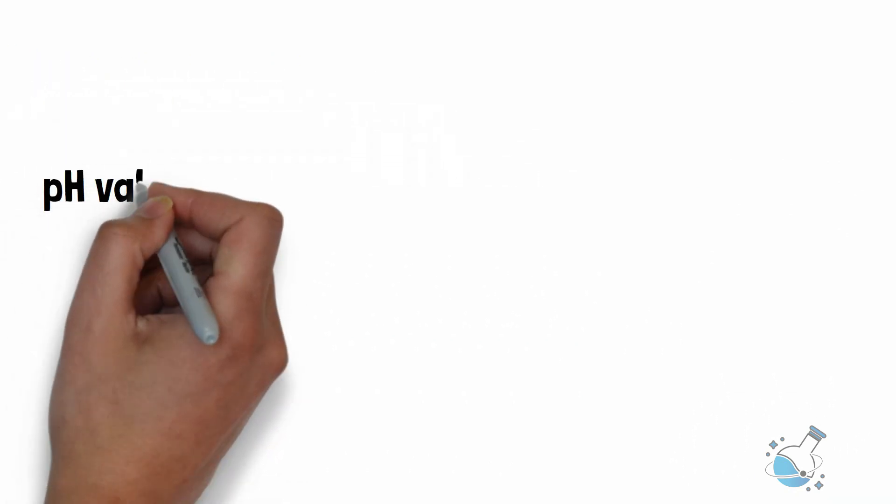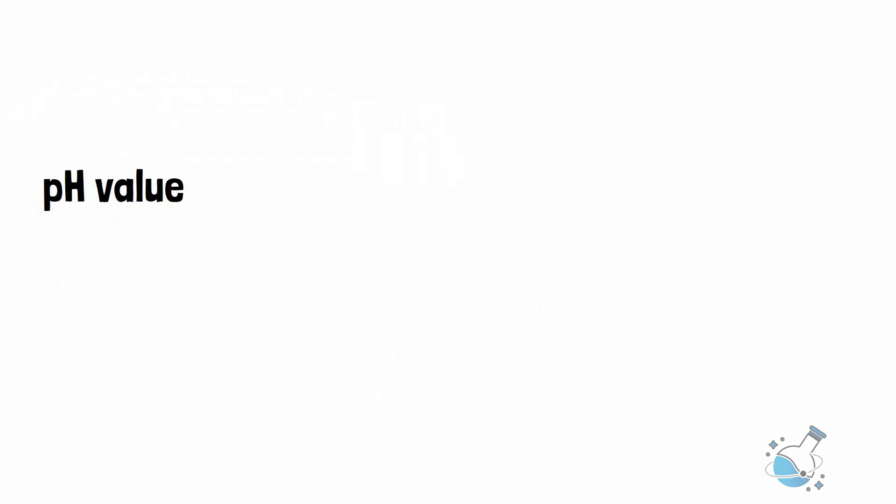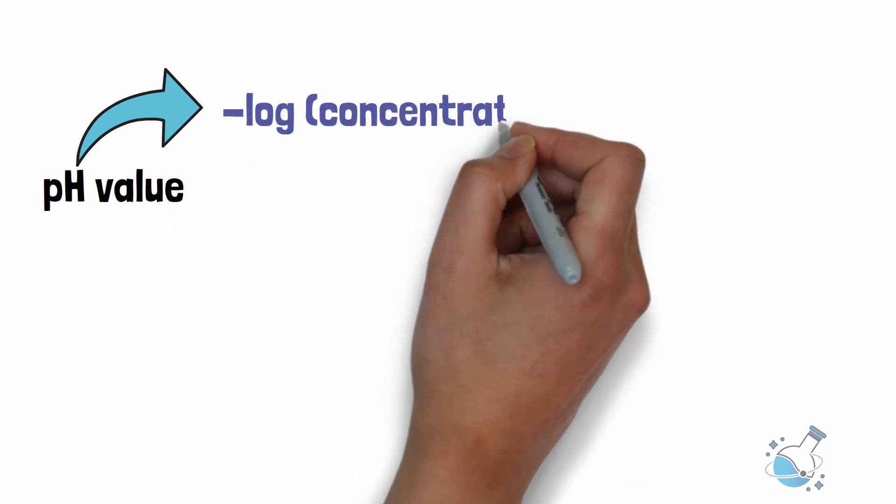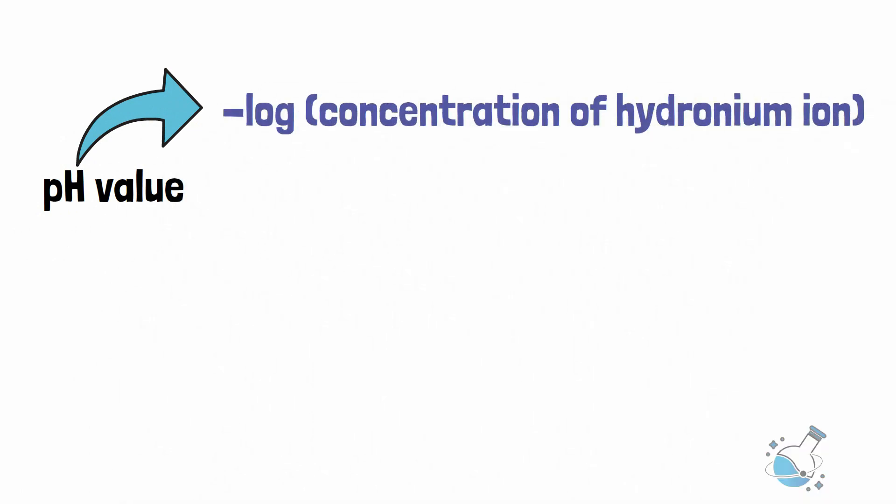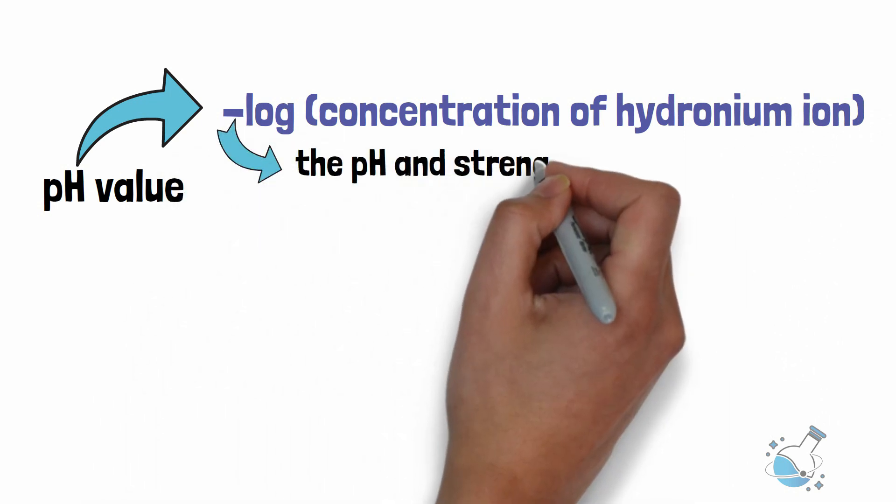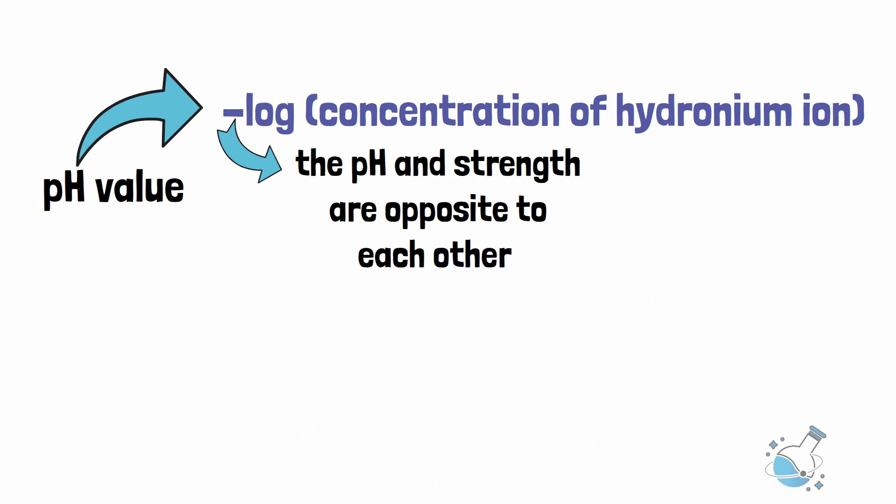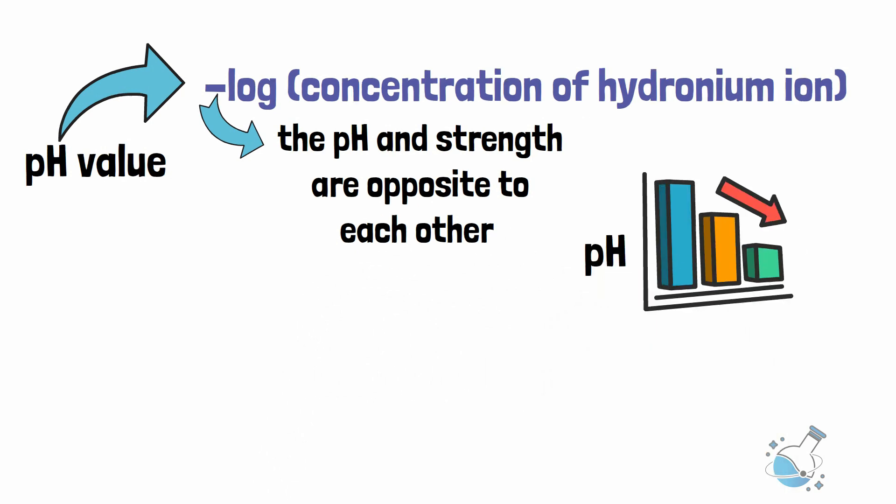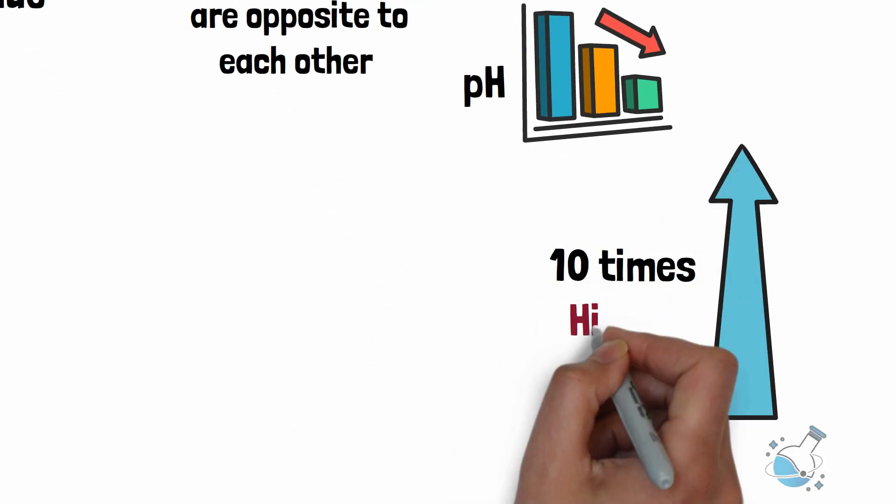The most common unit for the strength of an acid is its pH value. The pH is measured by calculating the negative logarithmic value of the hydrogen ion concentration in an aqueous solution. The negative sign here means that the pH and strength are opposite to each other. And for each unit of pH that decreases, the strength of the acid increases 10 times.